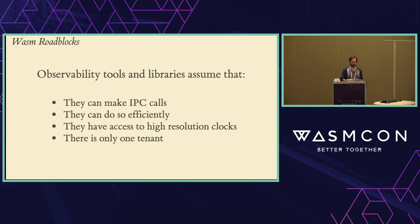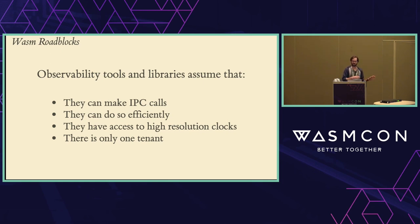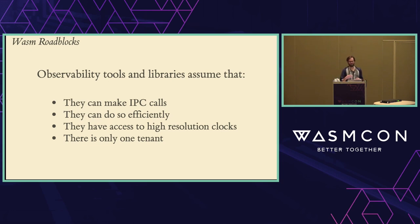The ultimate problem is that baked into all our observability tools — all the libraries, everything — is the assumption that the code is running in a normal privileged environment with access to the entire system. With Wasm, you can't guarantee that. The first assumption is: I can make IPC calls. If I want to track metrics and send them to StatsD or a Datadog agent, I need to make calls to a UDP server. Can you even do that? And is your host going to allow your plugin to make calls to your local infrastructure just to get some metrics out? They also assume they can do this efficiently — asynchronously, non-blocking, getting data out of the application — which can also be a challenge in Wasm. They also need access to high-resolution clocks. Every piece of data has a timestamp, and traces sometimes need nanosecond-precision timing. Up until recently, Cloudflare workers would lock the clock to the last IO event — there's real danger in giving untrusted code access to high-resolution clocks.